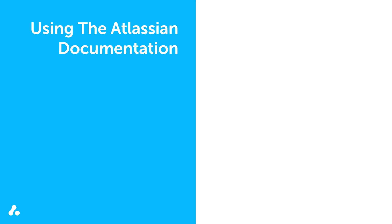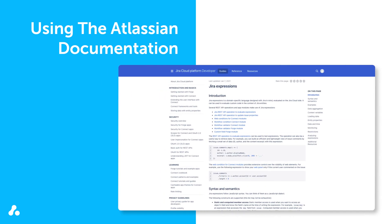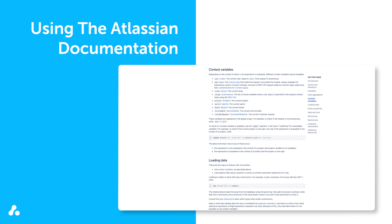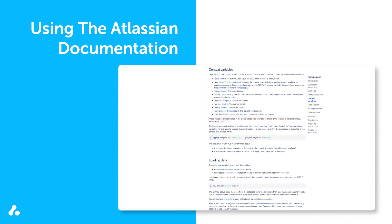Because Jira Expressions is a customized language from Atlassian, we recommend referring to their developer documentation for in-depth information. Here you'll find information on available context variables and associated properties. To use the document effectively, navigate to the section on context variables. Here you'll see a list of available context variables, along with an indication of what can be checked when the code is executed. To view the variable type, click on the Variable Name link.